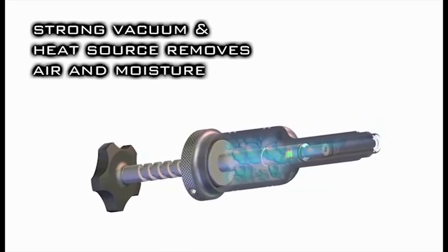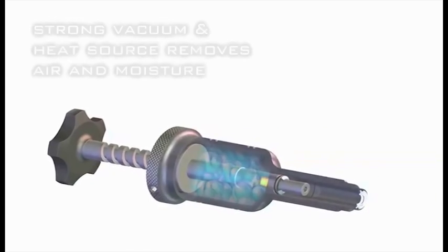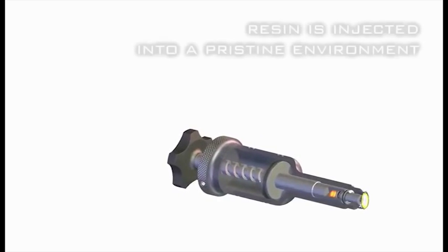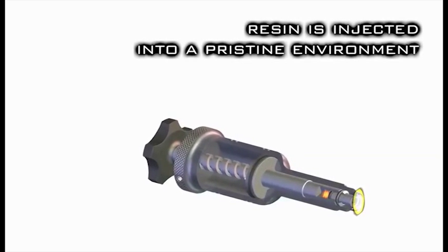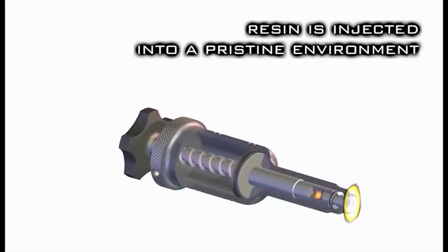But why is a strong vacuum and resin isolation an advantage to the technician? A strong vacuum will allow the complete removal of air, and in conjunction with a heat source, a vacuum allows moisture to quickly evaporate from the damage and move into the upper chamber. This allows for resin to be injected into a relatively pristine damage that will repair with more strength and less visibility.